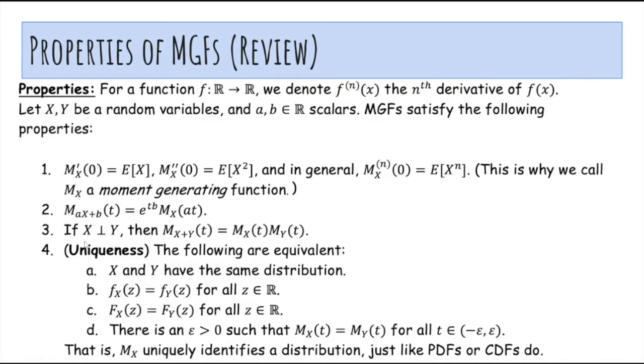The third property says that if X and Y are independent, then the MGF of X plus Y is just the product of the two MGFs, MX and MY.